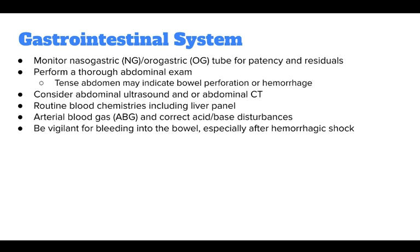For the gastrointestinal system, monitor nasogastric or orogastric tube for patency and residuals. Perform a thorough abdominal exam — a tense abdomen may indicate bowel perforation or hemorrhage. Consider abdominal ultrasound and/or abdominal CT. Obtain routine blood chemistries including a liver panel and arterial blood gas, and correct acid-base disturbances. Be vigilant for bleeding into the bowel, especially after hemorrhagic shock.